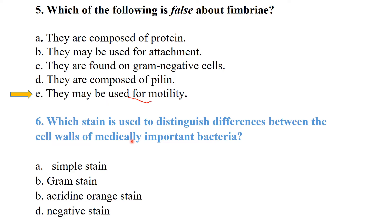Which stain is used to distinguish differences between the cell walls of medically important bacteria? The options include Gram stain, acridine orange stain, and negative stain. The best answer is Gram stain, which is used to differentiate medically important bacteria into gram-positive and gram-negative.